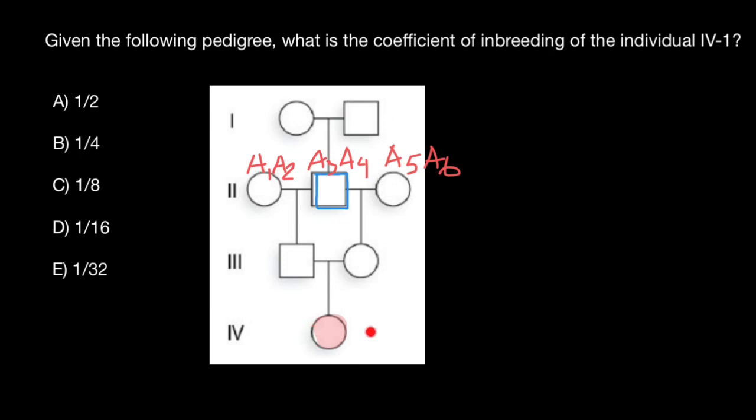Now let's say, can this person IV-1 inherit two A1 alleles? No, because from the grandmother he can inherit through his father only A1 or A2 allele, just one variant.